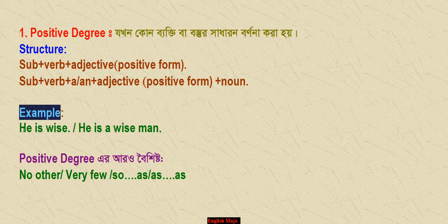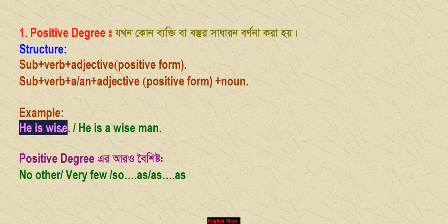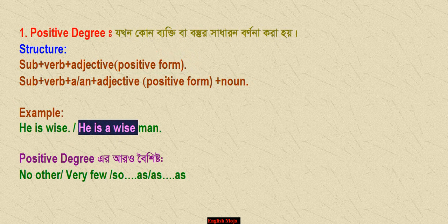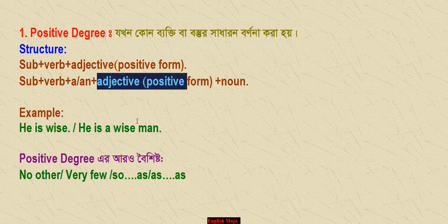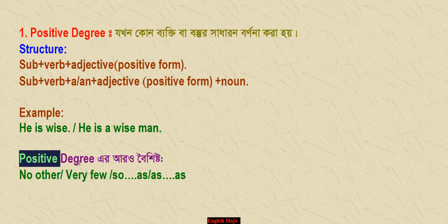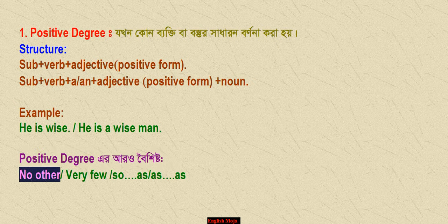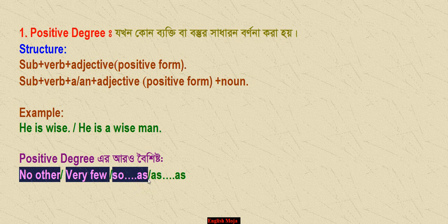Let's practice. The adjective is in its positive form. For example: 'He is wise.' This is the basic structure. He is wise. Another structure: 'He is a wise man.' As we know, the positive degree can also form sentences using 'as...as' — for example, 'as wise as.'